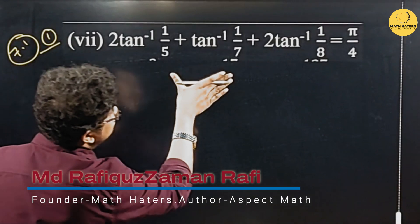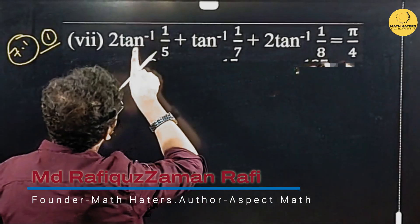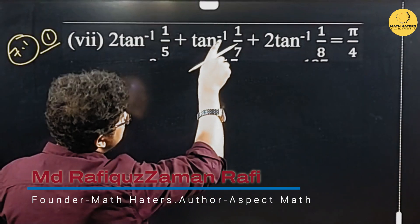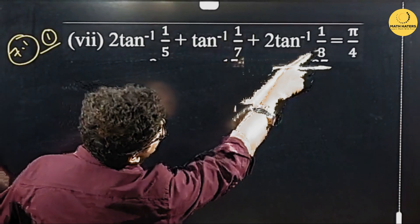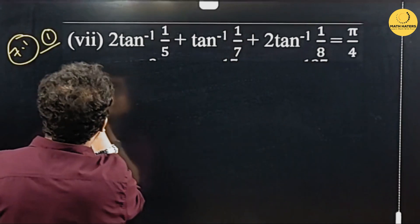So students, look at left hand side and right hand side. You can see 2 tan inverse 1 by 5 plus tan inverse 1 by 7 plus 2 tan inverse 1 by 8.